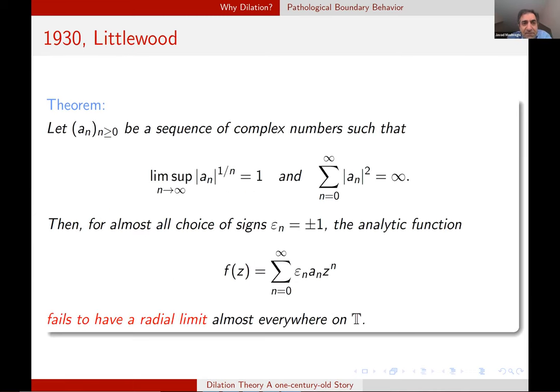The second evidence is by Littlewood. Consider any sequence which satisfies these two properties. The first one is to assure that this function is well-defined on the open unit disk. And the second one is to assure that it's not in H^2. And then, for almost all choices of the sign plus and minus one, this function fails to have radial limits when they go to the boundary.